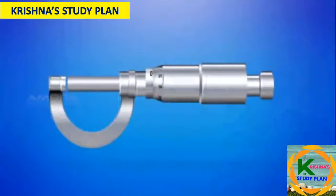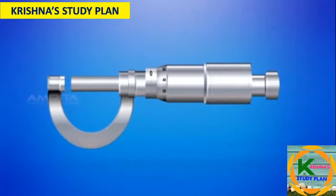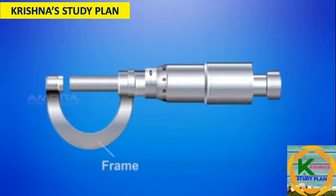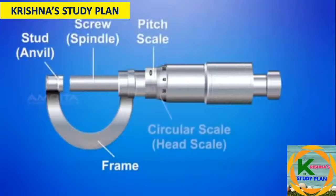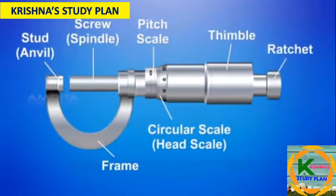Before that, we have to familiarise ourselves with the main parts of the screw gauge. They are: Frame, Stud or Anvil, Screw or Spindle, Pitch Scale, Circular Scale or Head Scale, Thimble, and Ratchet.